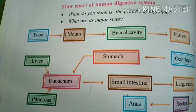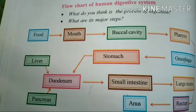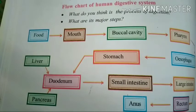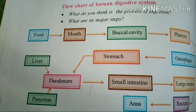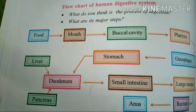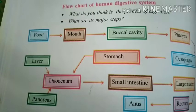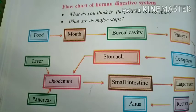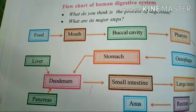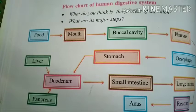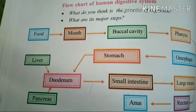At the stomach, some juices are produced — acid and gastric juices are produced here. Then comes the duodenum, which is related to both the liver and pancreas. Bile juice is secreted by the liver and pancreatic juice is secreted by the pancreas. So clearly: food goes to the mouth, from the mouth to the buccal cavity, buccal cavity to the pharynx, pharynx to the esophagus, esophagus to the stomach.